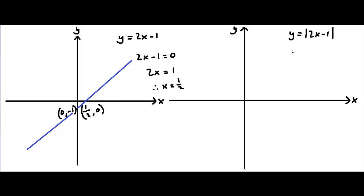The question now becomes: how do we draw the graph of y equals the absolute value of 2x minus 1? Well, first of all, we must know that if y equals the absolute value of 2x minus 1, then y is greater than or equal to 0. That is because the absolute value of any number n is greater than or equal to 0. So we know that the line will not exist underneath y equals 0.